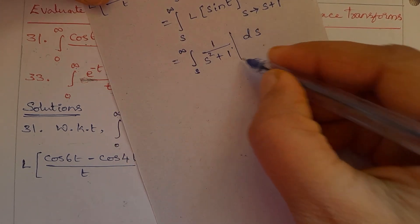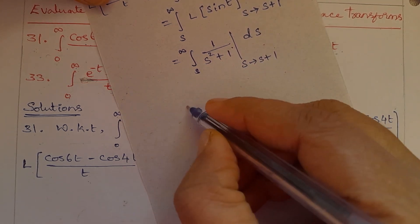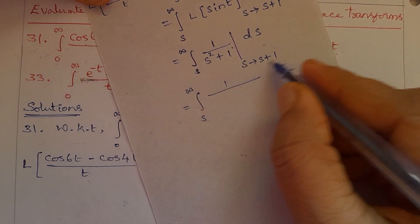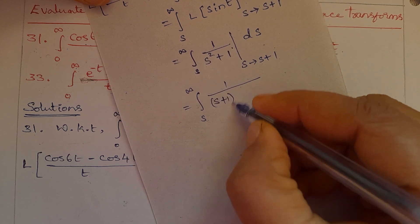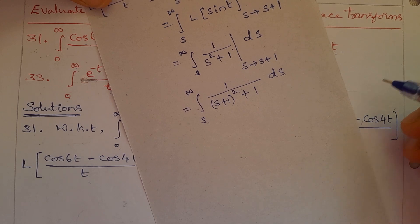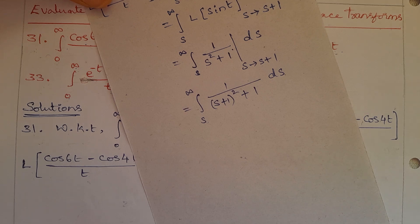Put s tends to s+1. So the expression becomes the integral from s to infinity of 1 divided by (s+1)² + 1, ds. We know the formula: integral of 1 divided by 1 + x² dx equals tan inverse of x.